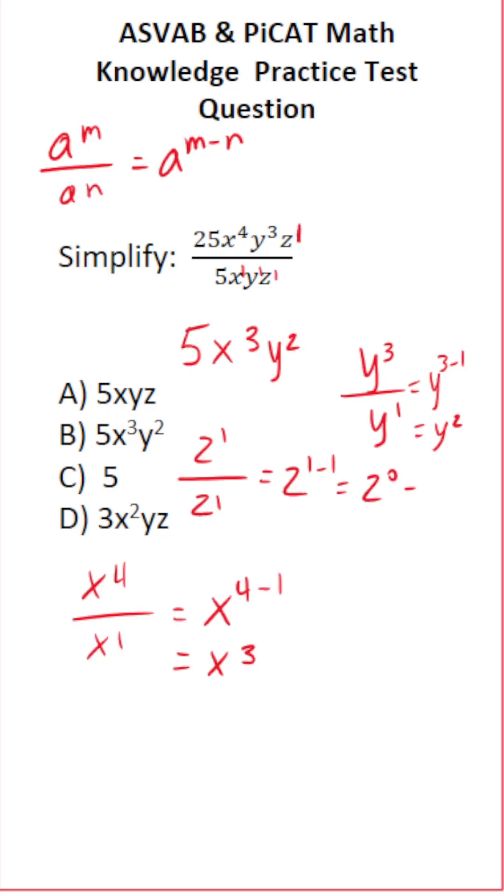Anything raised to the 0 power is just 1. So we could do times 1 here but it doesn't make a lot of sense to include that because all of this times 1 is just itself. So we do not have to write that 1 there.